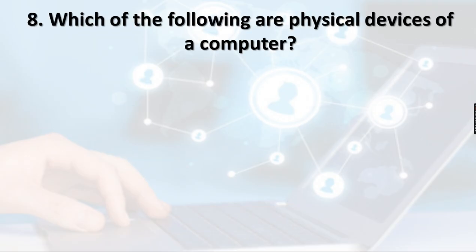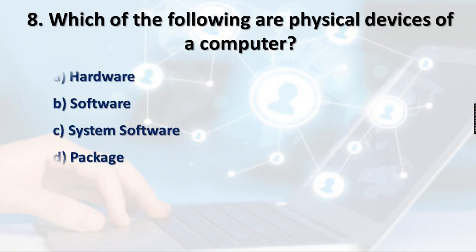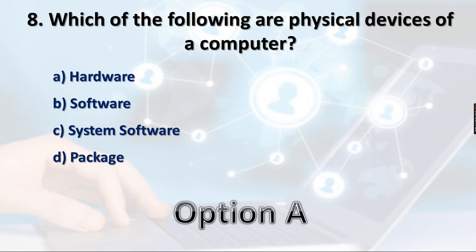Question 8: Which of the following are physical devices of a computer? Option A: Hardware, Option B: Software, Option C: System software, Option D: Package. Software cannot be seen or felt. System software is a part of software, and package is also part of it — so B, C, and D are all incorrect. Hardware is the physical device of a computer which we can see, touch, and feel. Option A is the right answer.